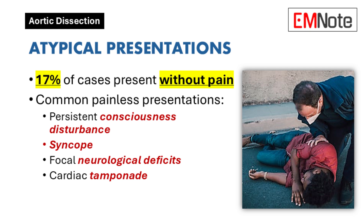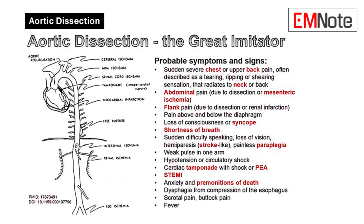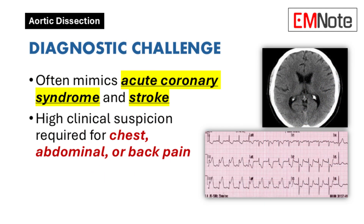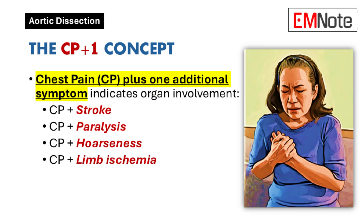Some patients, especially older patients, may not have any pain at all — which makes this really tough. In those cases, we have to look for atypical presentations like syncope, stroke-like symptoms, or even cardiac tamponade. These are more subtle signs, so we need to maintain a really high index of suspicion.